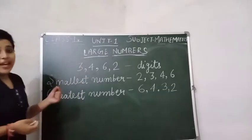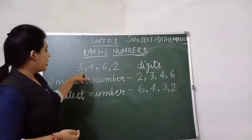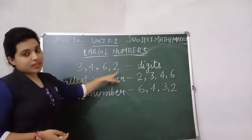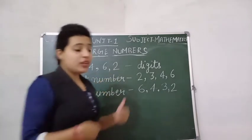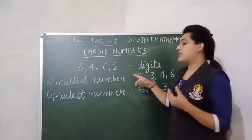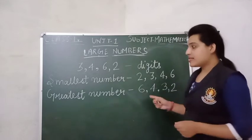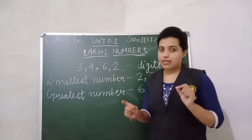Here we have these four digits: 3, 4, 6, 2. We will use these four digits to make the smallest number and the largest number. First, we will make the smallest number.